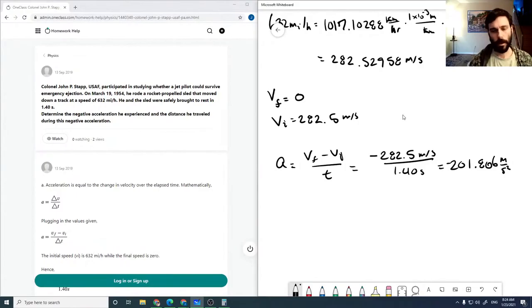Also, they want the distance traveled during this acceleration. So XF is VI times T plus 0.5 times A times T squared.